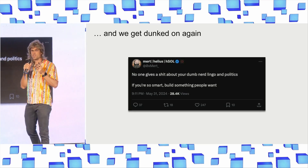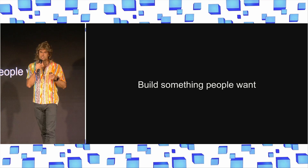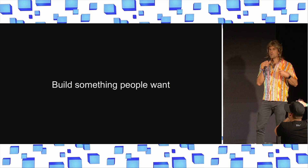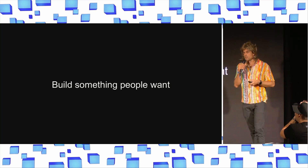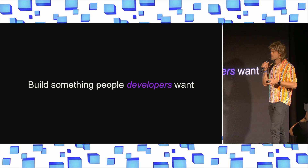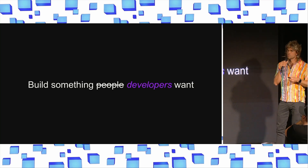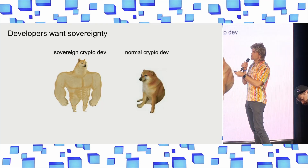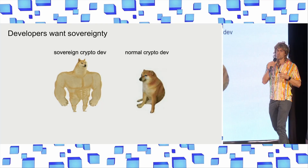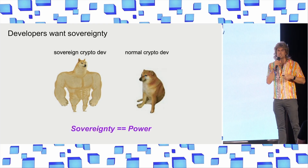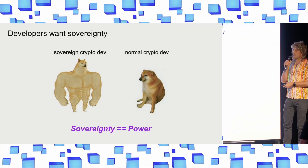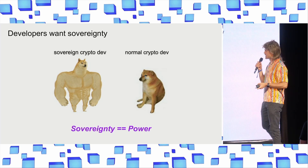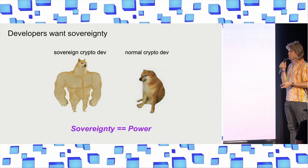Now, I think that there's a synthesis here, which is if you think about this phrase, "build something people want" — the people are users. So who are the users when it comes to blockchain infrastructure? Well, the users are developers. So we should be building something that developers want. And what I want to convince you of today is the fact that developers want sovereignty. And the reason they want sovereignty is because sovereignty is equal to power. And when you give developers sovereignty, they have the ability to build better applications compared to your normal standard crypto developer.